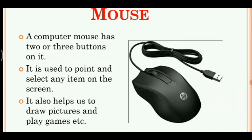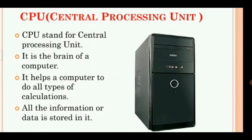A computer mouse has two or three buttons on it. It is used to point and select any items on the screen. It can also be used to select items, just like how a mouse works.